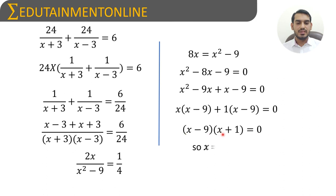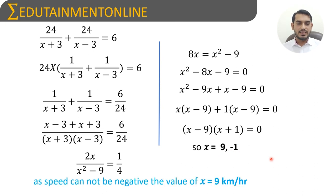Equating each factor to zero: x minus 9 equals zero gives x equals 9, and x plus 1 equals zero gives x equals minus 1. Since speed cannot be negative, we take x equals 9. Therefore, the speed of the boat in still water is 9 kilometers per hour.